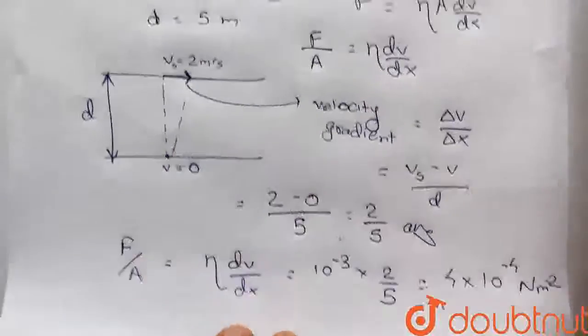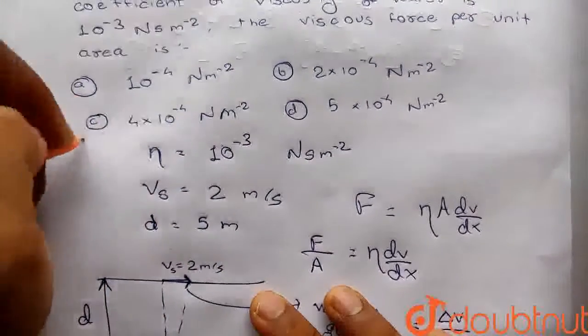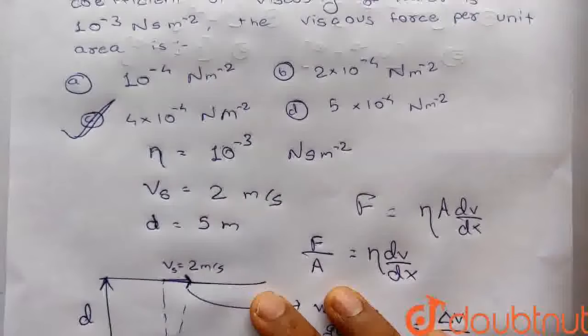Now if we look at the options, then see option C: 4 into 10 raised to power minus 4. This will be the correct answer for this question. Thank you.